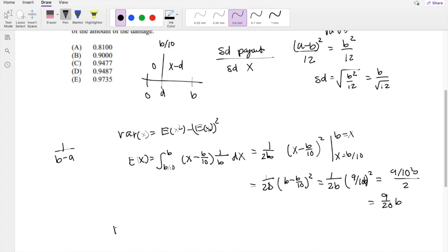Alright, time for the second moment. For the second moment, instead of x, we just do x squared, so the range is still the same, but instead of x, we go x squared. Probability function is still the same, so you get 1 over 3B, x minus B over 10 cubed, evaluating from x is equal to B over 10 to x is equal to B.